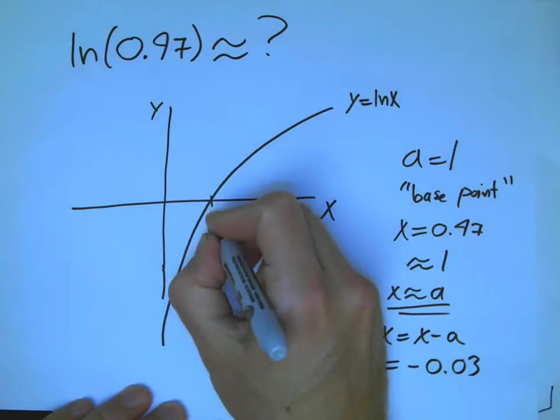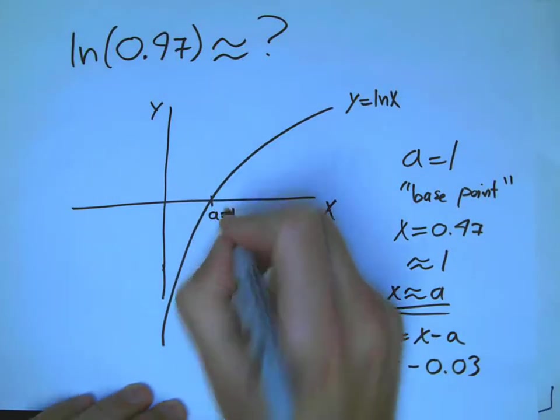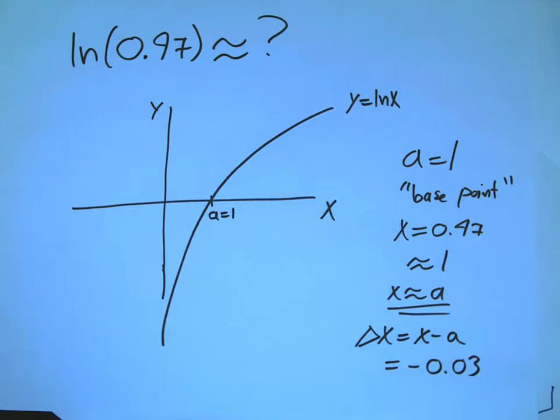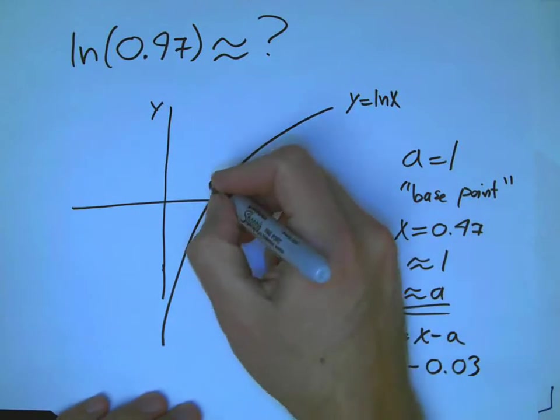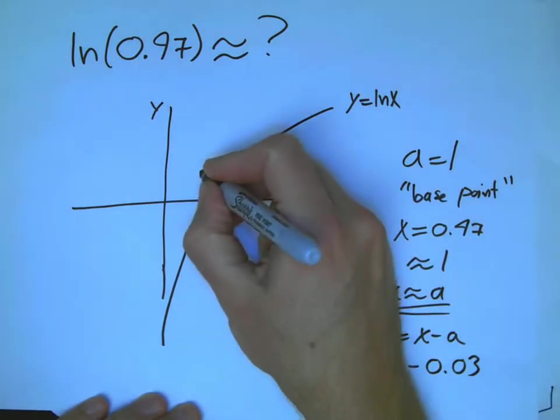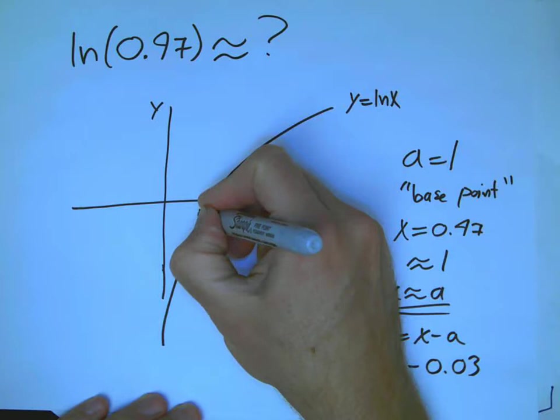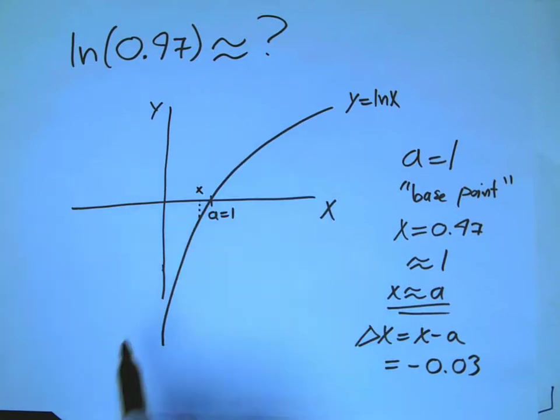So, we're going to look at a equals 1 here, which is simple because it's easy to calculate the ln of that. And we're looking at a number that's just a little bit to the left of that. I'm going to exaggerate. Here's x. It's not really that far.